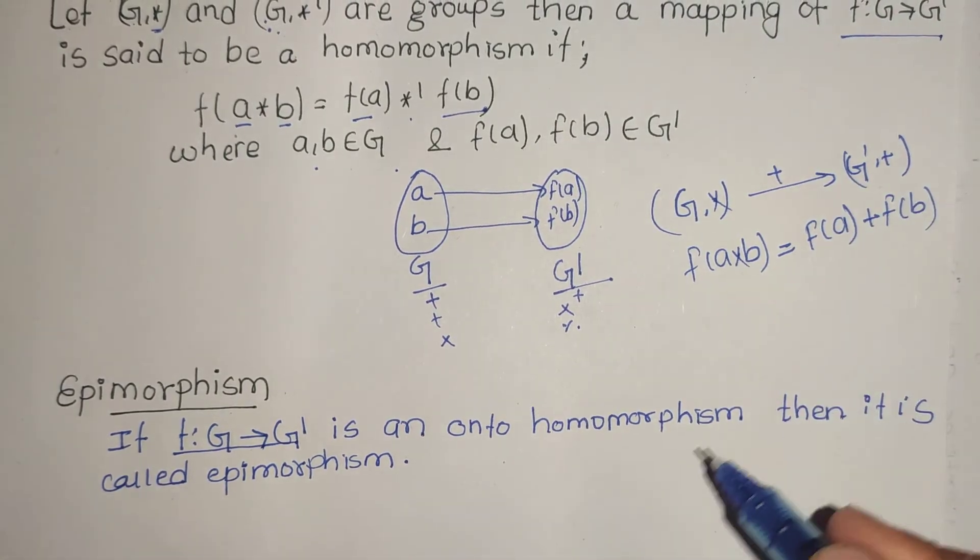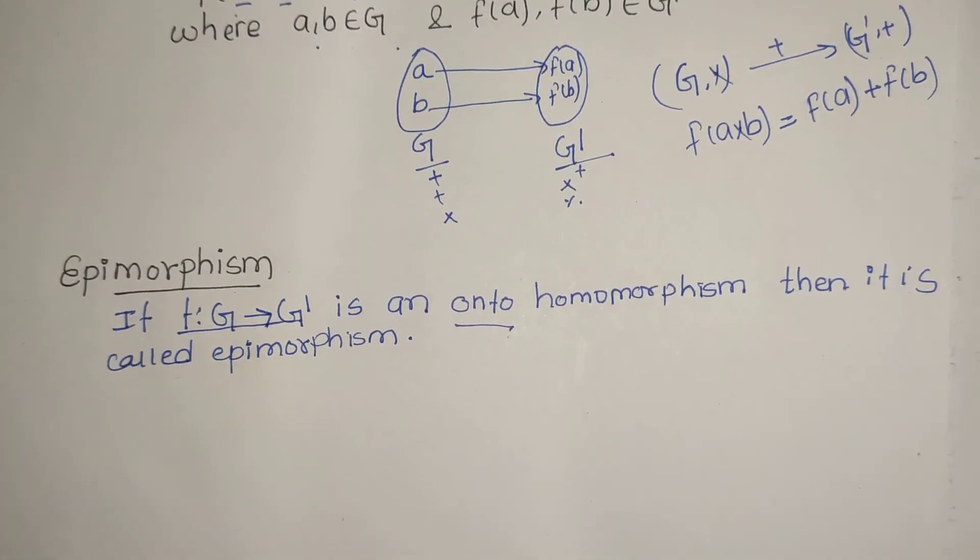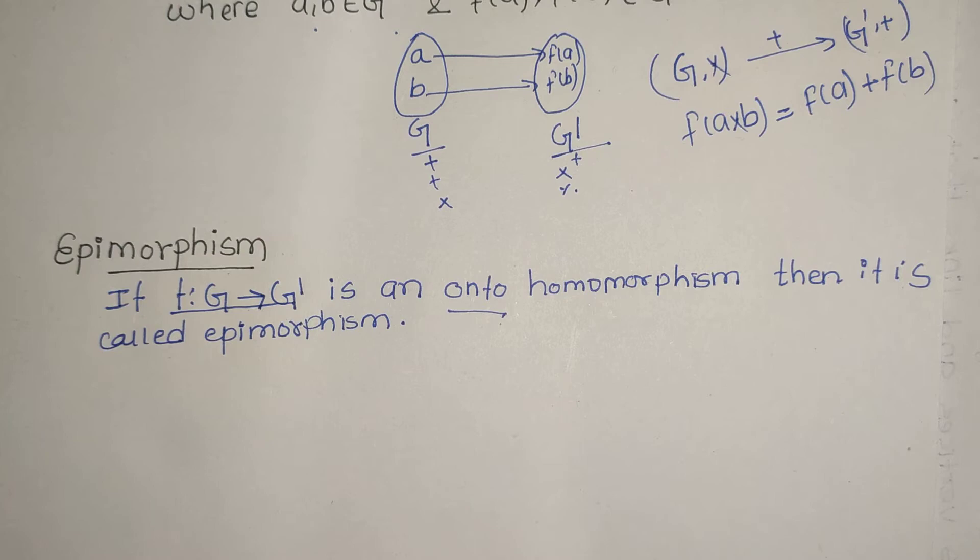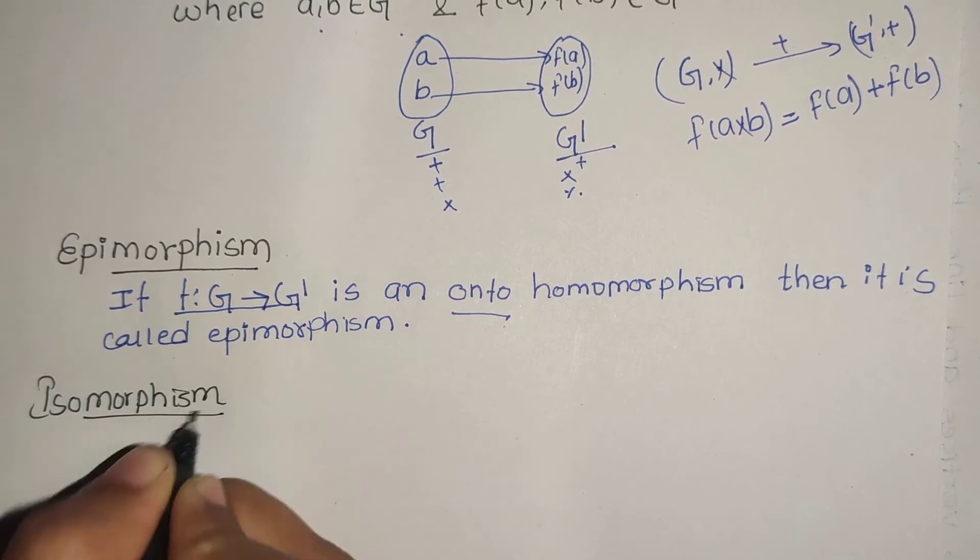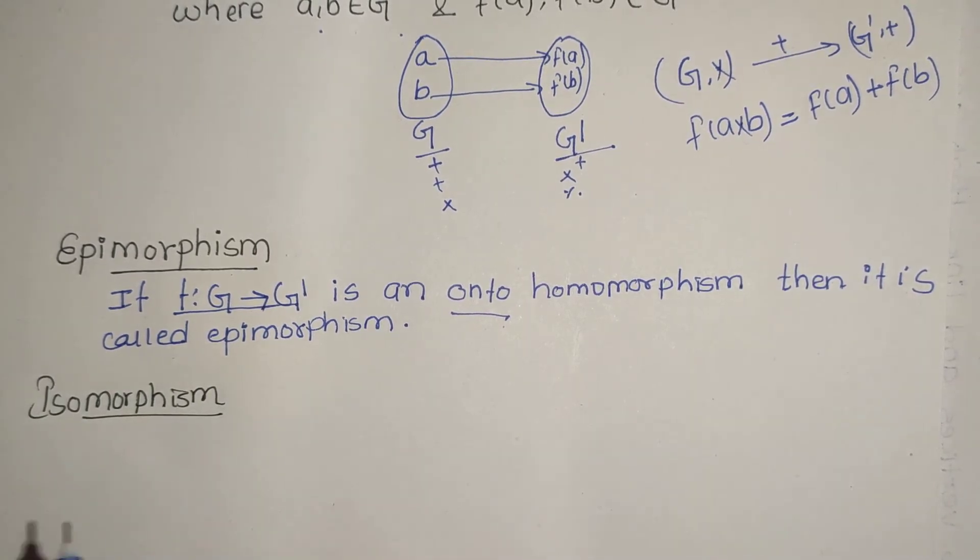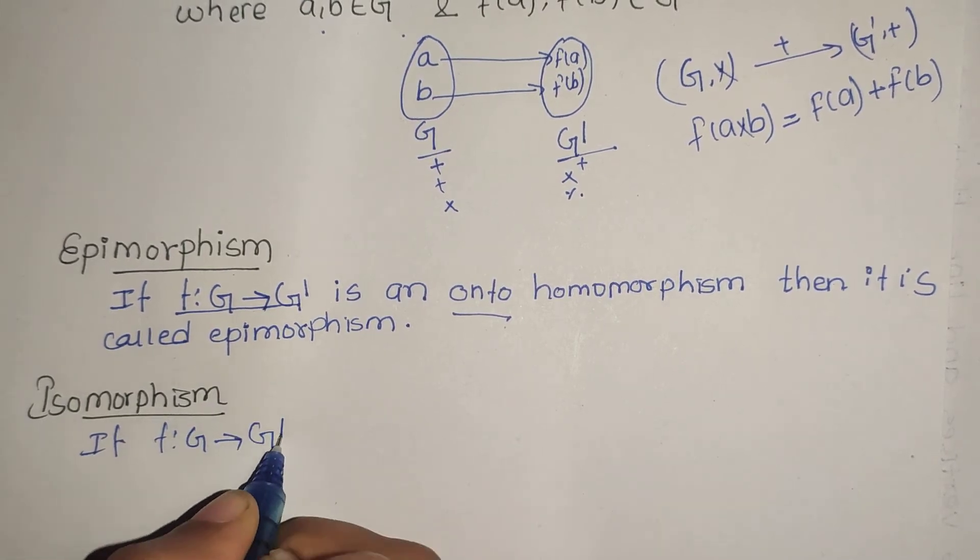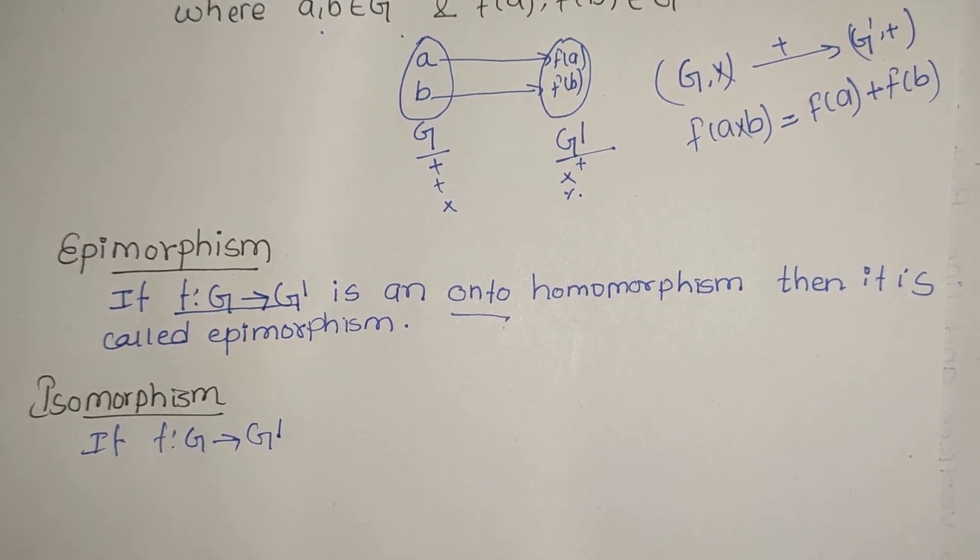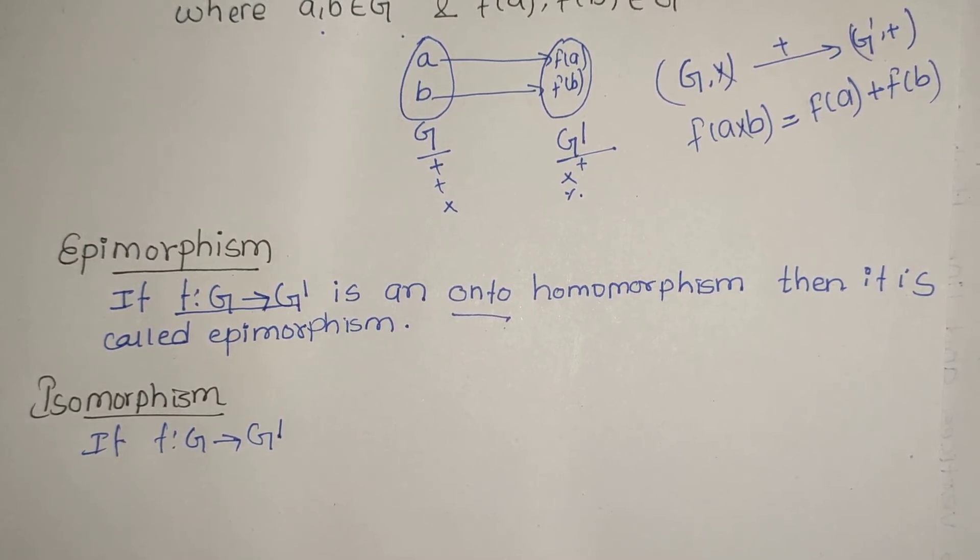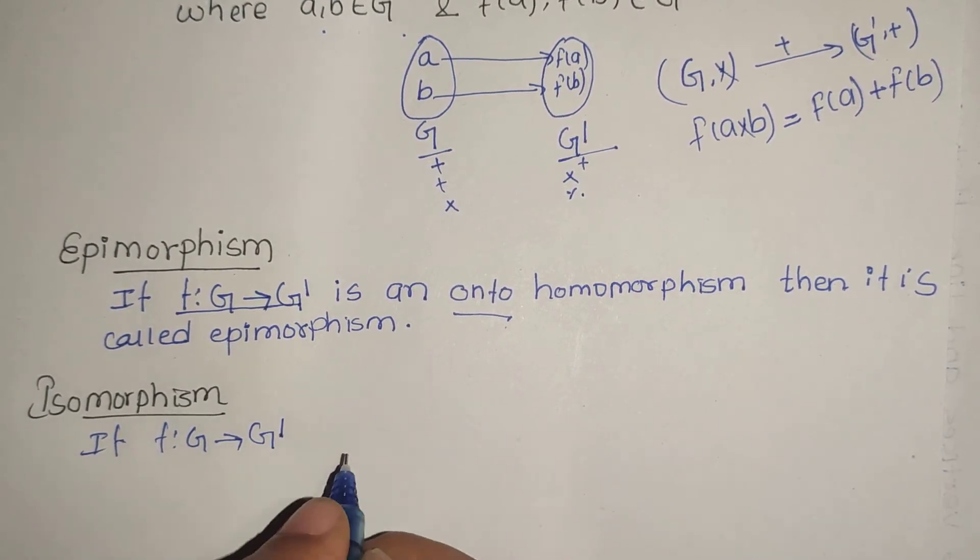Isomorphism. Let me formally define it: let (G,*) and (G',*') be groups, then a mapping f: G → G'...